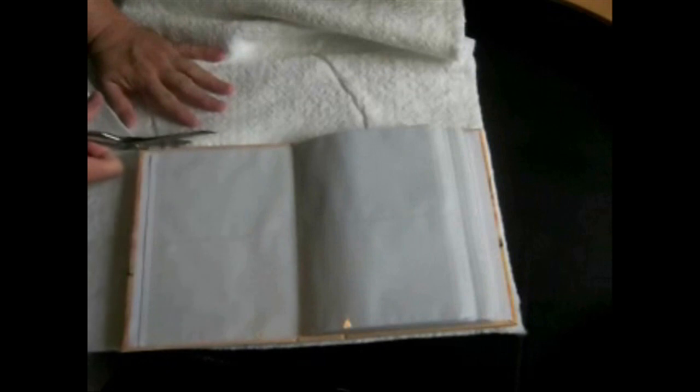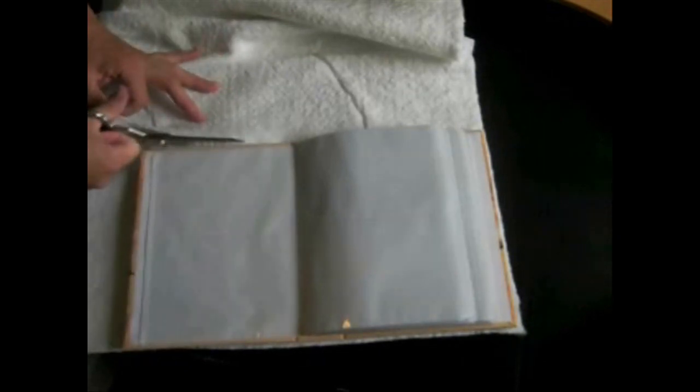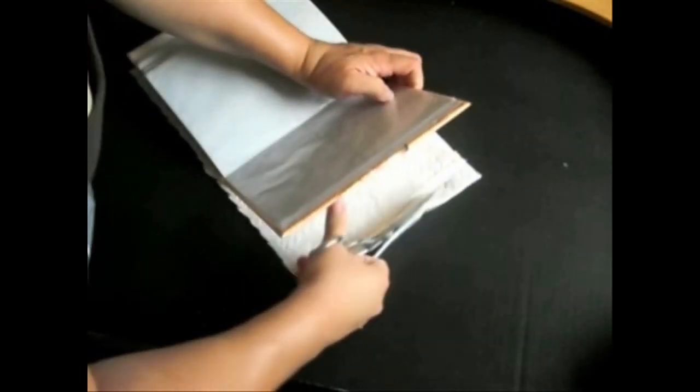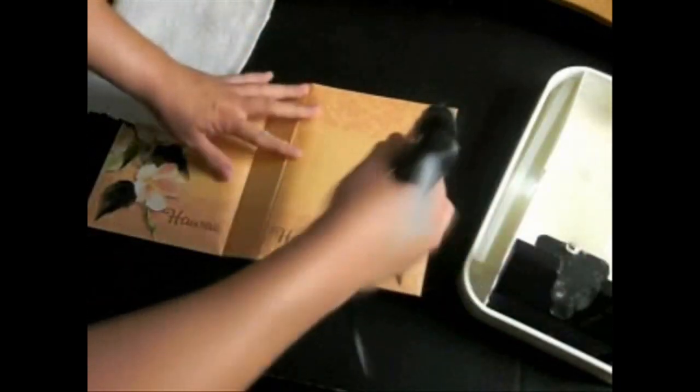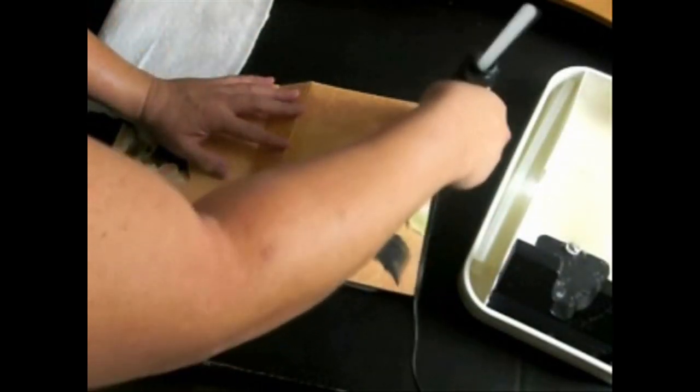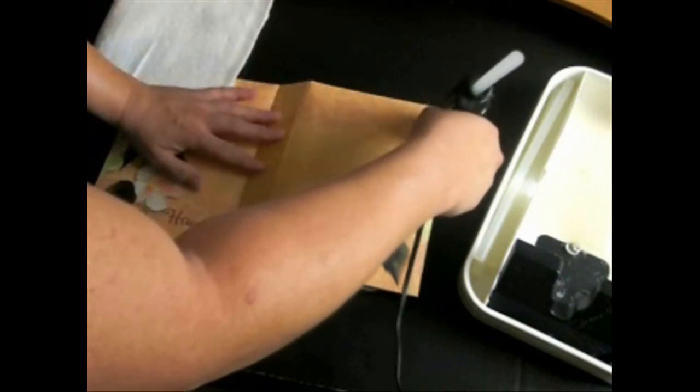You just want to cut the batting to exactly the size of your photo album. Now you're just going to hot glue the batting to your album.